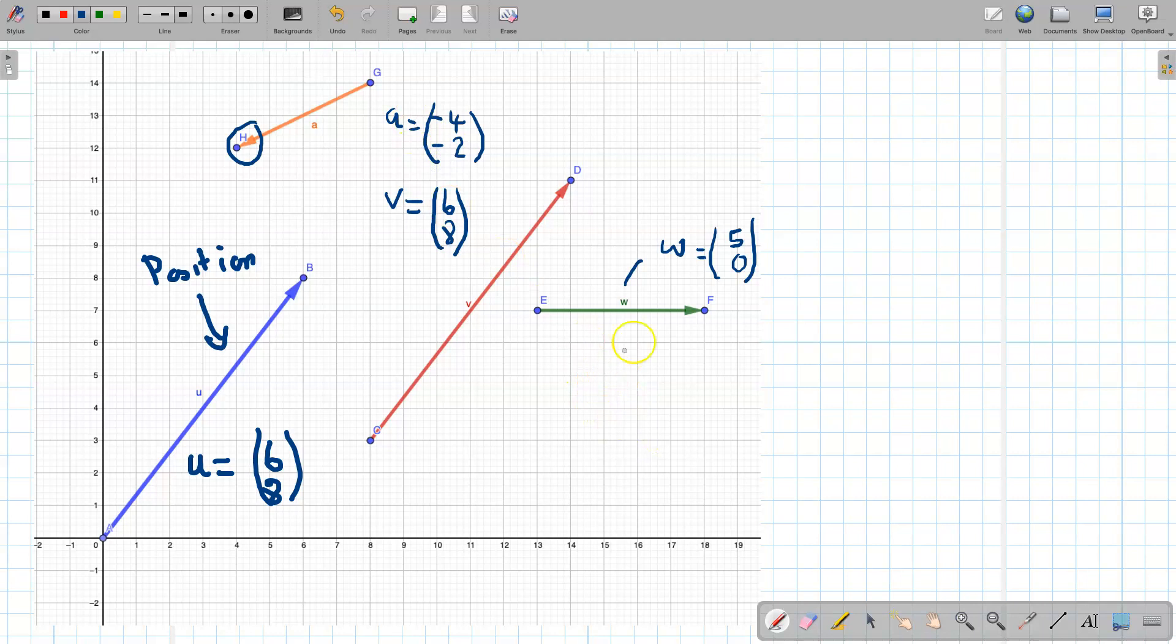And one final thing, you can change the direction. So if you were to say w is going in this direction where that arrow is, if I was to have minus w, it would just be the same vector, but going in the opposite direction. So minus w would give me negative 5, 0.